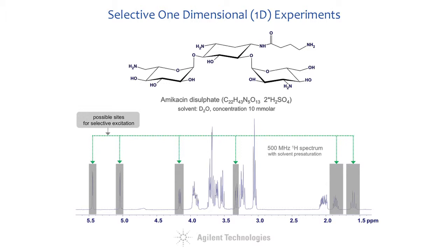We use a 500 megahertz DD2 console and a 1 NMR probe. The structure of amikacin consists of three sugar units and an aliphatic side chain corresponding to four isolated spin systems in the molecule.